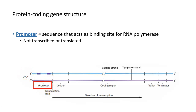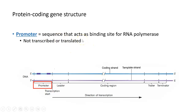The promoter is a sequence in the DNA that acts as a binding site for the enzyme called RNA polymerase. RNA polymerase is the enzyme that performs transcription — it takes this DNA and transcribes it into an mRNA. There has to be an area on the DNA that attracts RNA polymerase and allows it to bind so that this gene can be transcribed, and that's what the promoter region does. The promoter sequence itself is not transcribed, it doesn't get made into RNA, nor does it get translated into protein.